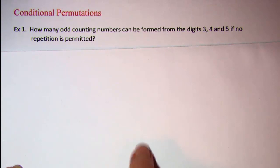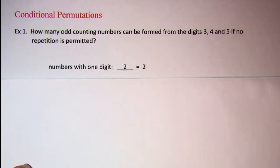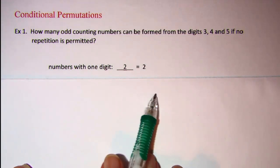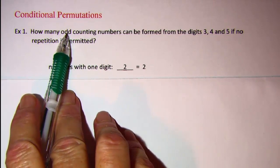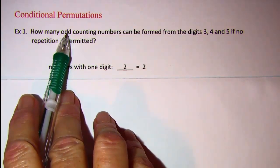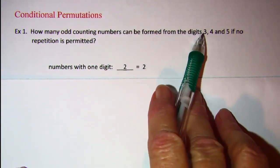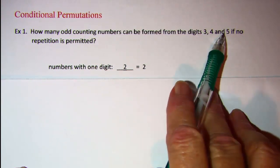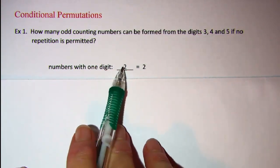To start, the number of numbers with one digit is only two. Since I'm only looking at odd one digit numbers, I can have a three or I can have a five. So there's two of those.